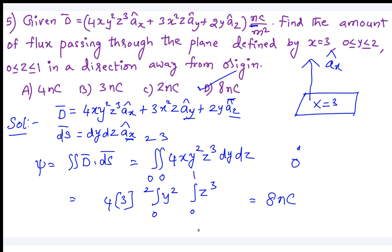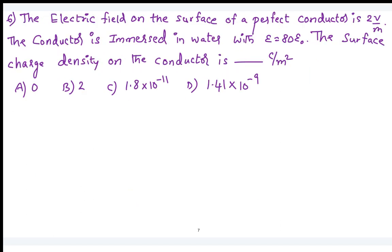We will go to the next one then. The electric field on the surface of a perfect conductor is 2 volts per meter, and the conductor is immersed in water with relative permittivity of 80. Then find the surface charge density on the conductor.